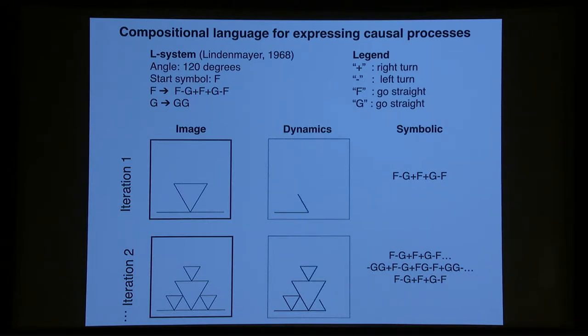So in this case, the start symbol's F, and there's a rewrite rule for F and G, and at the first iteration, we get that string on the right-hand side in the middle of the screen there, F minus I and G, and so on. And then at the next iteration, we get that more complicated string at the bottom right of the screen. Now, L-Systems pair very nicely with Turtle graphics from the Logo programming language, where the idea is there's a little Turtle and it runs across the canvas, dragging ink.